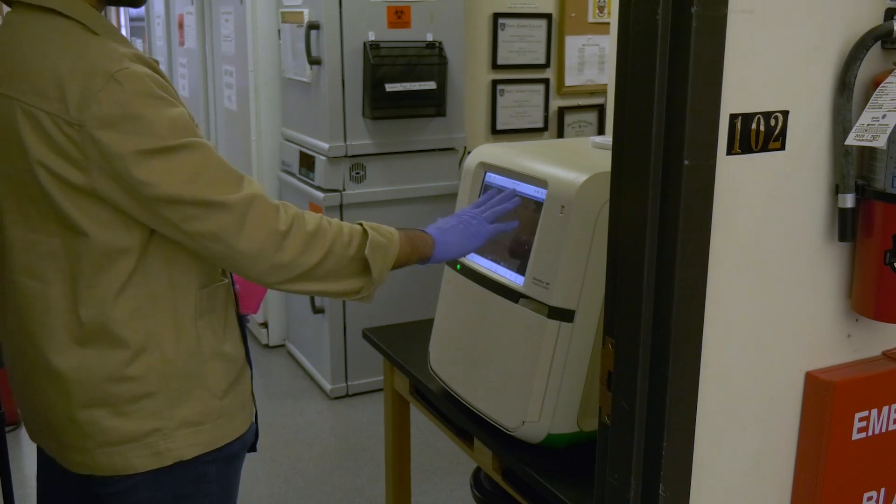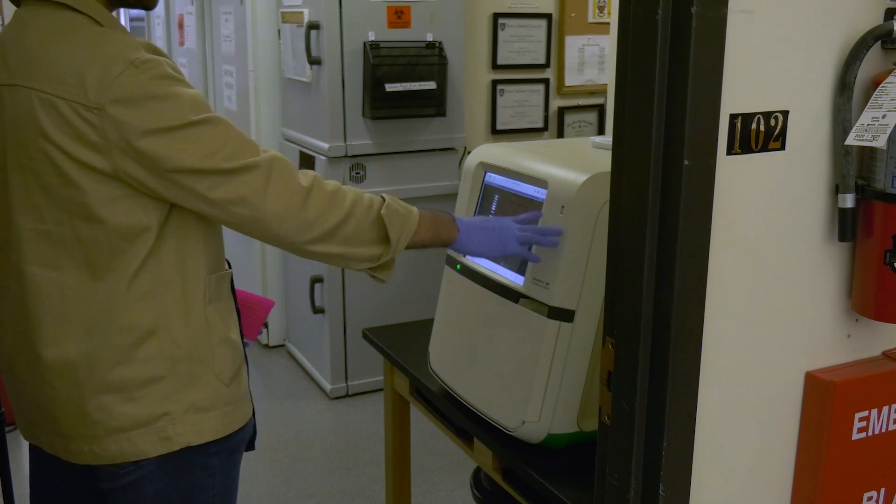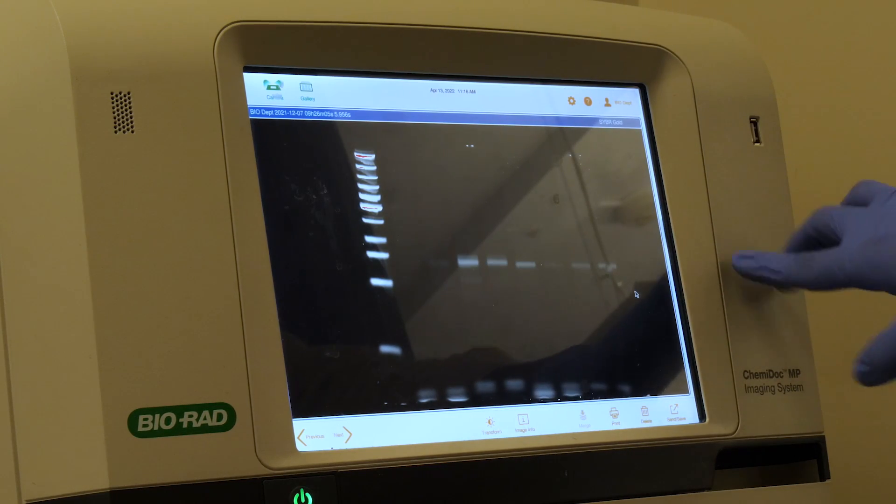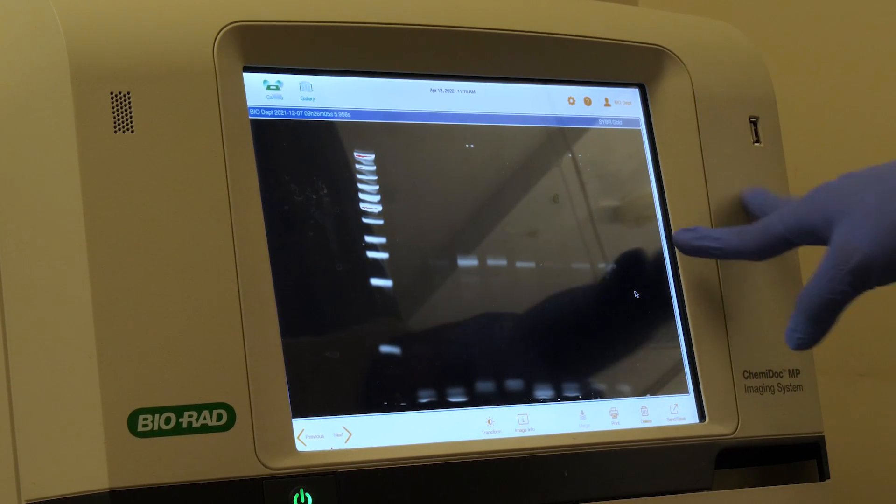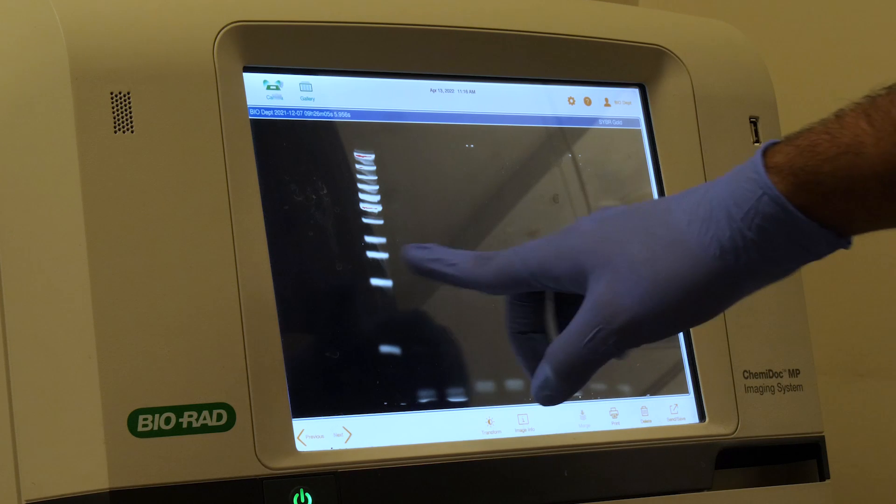After running your gel and having it stained, when looking at it under the imaging system, you can see that there are bands present, which means we have successfully isolated our microRNAs of interest. You can further analyze your results from this image.